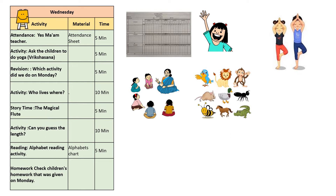Who lives where: do the 'who lives where' activity with the children. Introduce the concept of habitat — for example, humans live in a house, fish live in water. Now ask the children where monkeys, cows, birds, lions, rats, etc. live.